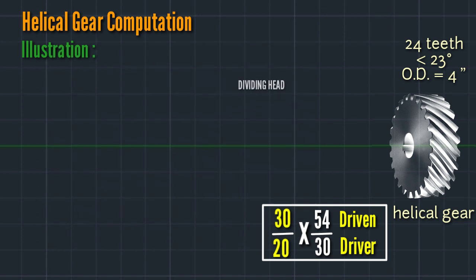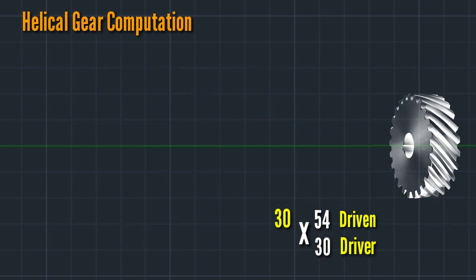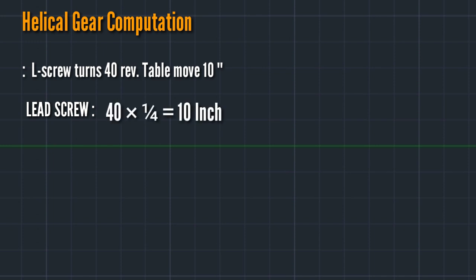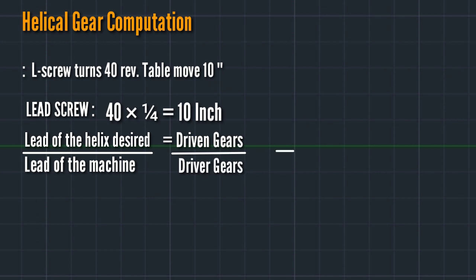This is the illustration and arrangement of the gears. Remember: the leadscrew turns 40 revolutions and the table moves 10 inches, so the milling machine constant is 40 to 1. That is 40 times 1 equals 40, divided by 4 equals 10 inches. Lead of helix desired divided by lead of machine equals driving gears divided by driver gears.